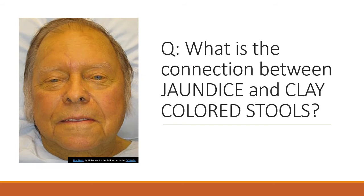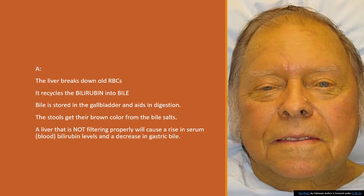What is the connection between jaundice and clay-colored stools? The liver is responsible for breaking down old red blood cells, and then it recycles the bilirubin and turns it into bile. Those bile salts are then stored within the gallbladder and they aid in digestion. The stools actually get their brown color from the bile salts. So a liver that is not filtering properly will cause a rise in serum bilirubin levels and a decrease in gastric bile. Those stools don't get stained that yellow-brown color. Instead, that yellow-brown bilirubin remains in the bloodstream and starts to stain the skin, sclera, and mucous membranes.